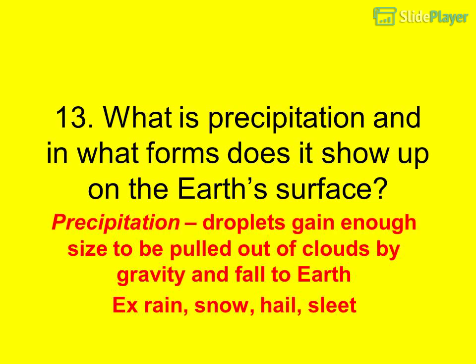Question 13: What is precipitation and in what forms does it show up on the Earth's surface? Question 14: Precipitation — droplets gain enough size to be pulled out of clouds by gravity and fall to Earth. Forms include rain, snow, hail, and sleet.